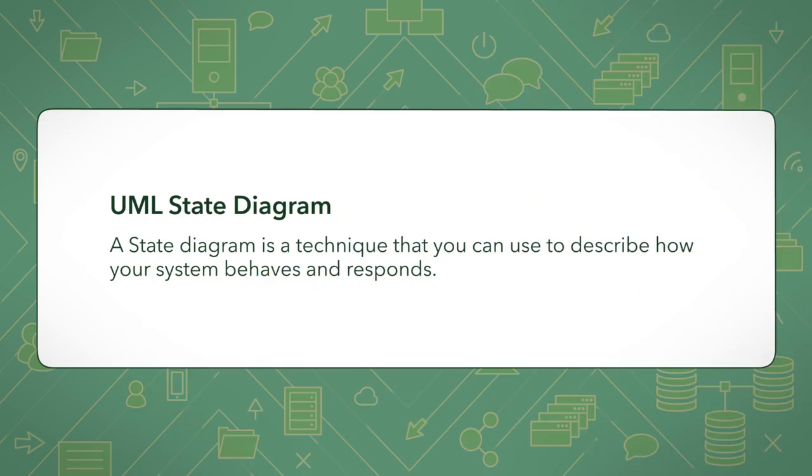Now it's time for you to learn about UML state diagrams. A state diagram is a technique that you can use to describe how your system behaves and responds. When an event occurs, you note how a system acts or behaves.